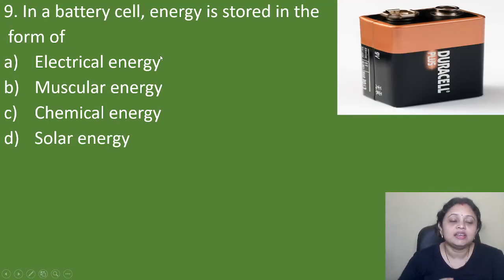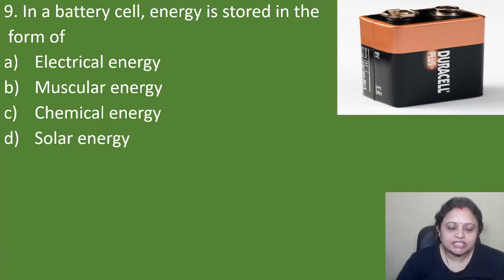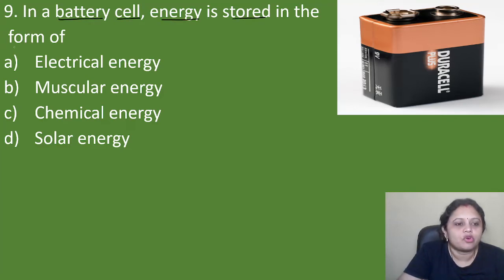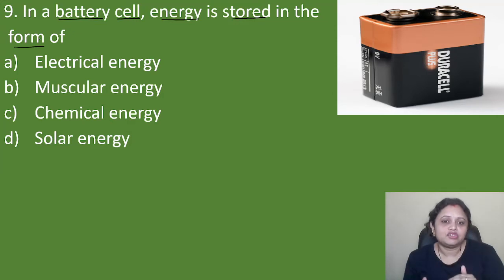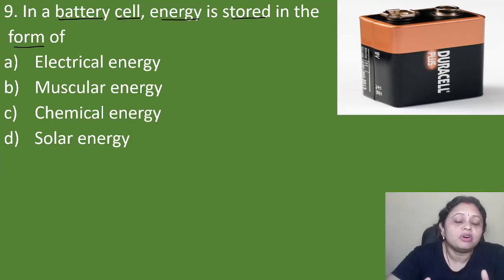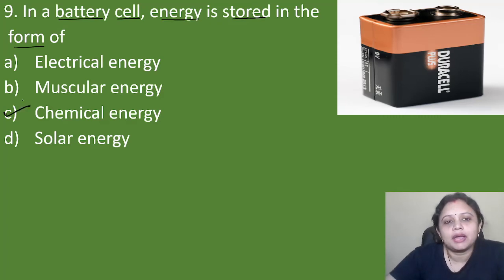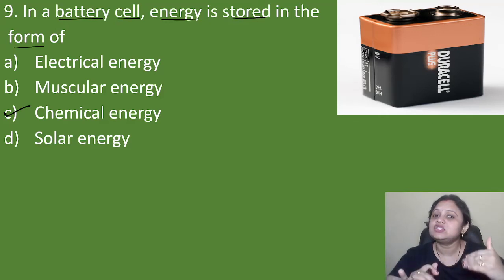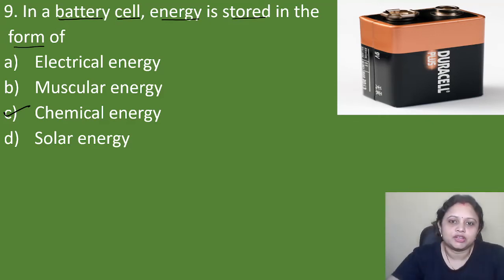Next question: in a battery cell, energy is stored in the form of — option A: electrical energy, B: muscular energy, C: chemical energy, D: solar energy. In the battery cell, energy is stored in the form of chemical energy. We use battery cells in remotes and many other things. The correct answer is option C, chemical energy.